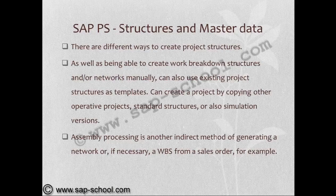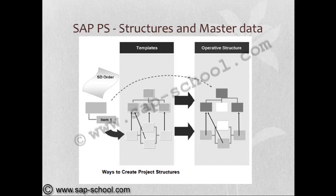Assembly processing is another indirect method of generating a network or, if necessary, a WBS from a sales order. We can see the creation of WBS structures in different ways: from templates, from other operative structures. In the coming lessons, we will learn about the prerequisites to create the WBS structure and WBS elements.